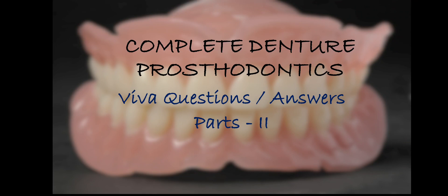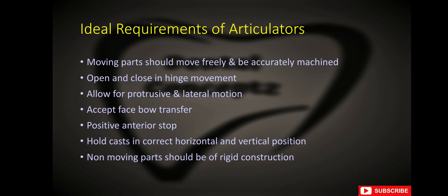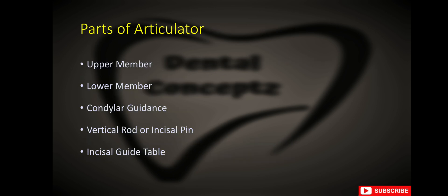Part 2 of complete denture prosthodontics viva questions and answers. What are the ideal requirements of articulators? In an articulator, the moving part should move freely and be accurately machined. It should open and close in hinge movement, allow for protrusive and lateral motion, accept face bow transfer, have a positive anterior stop, and hold the cast in correct horizontal and vertical position. The non-moving part should be of rigid construction.